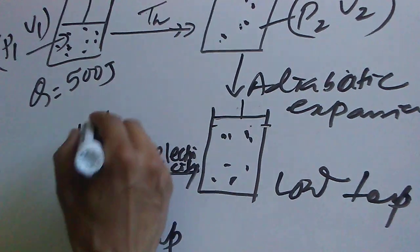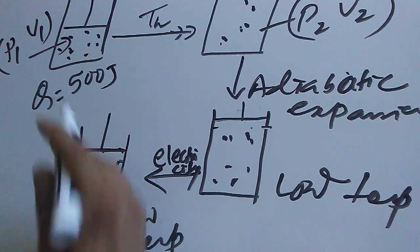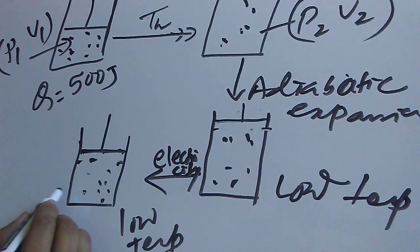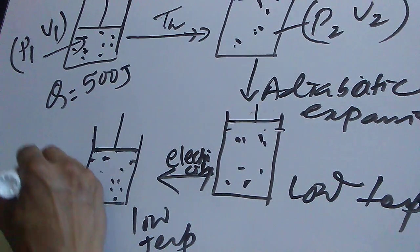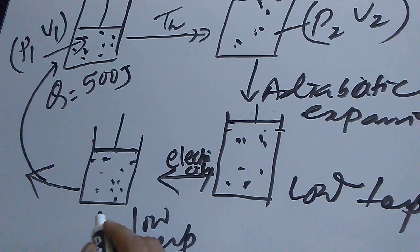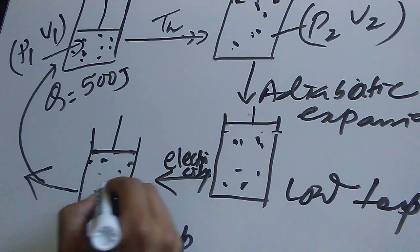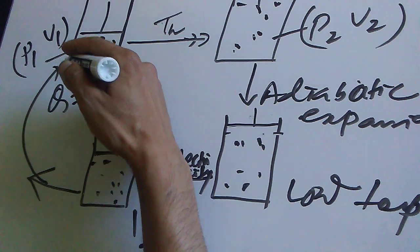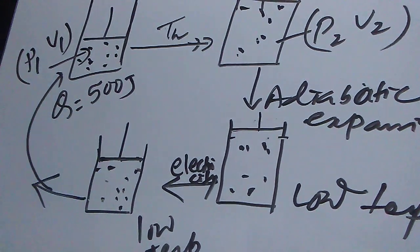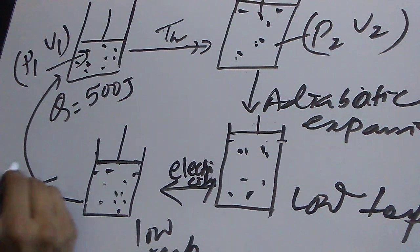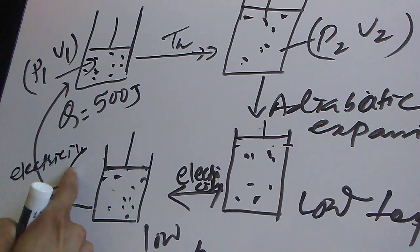Further, we supply more electricity to compress the gas adiabatically — adiabatically means no heat goes in or out of the system. We apply more electricity and reach back to the initial state.